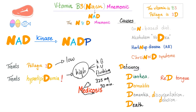So this is vitamin B3. The pellagra is 3D: diarrhea, dermatitis, dementia, and finally death. You can add more symptoms: disorientation, delusion, and red tongue. What are the causes of pellagra? Strictly corn-based diet, alcoholism, Hartnup disease, and carcinoid syndrome.